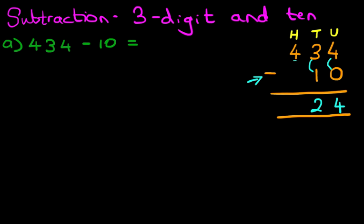And finally, we're going to do the hundreds column. The 4 minus 0. That's nice and easy, it is 4. And we have our answer. 434 minus 10 is 424. That is correct.